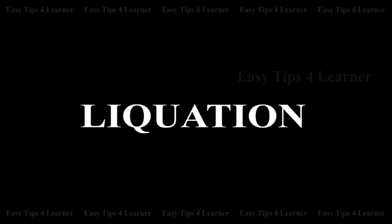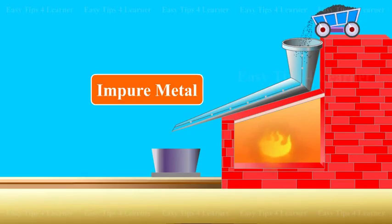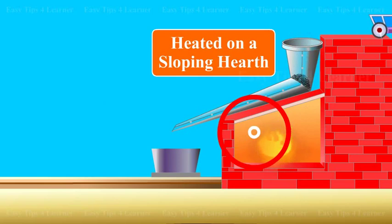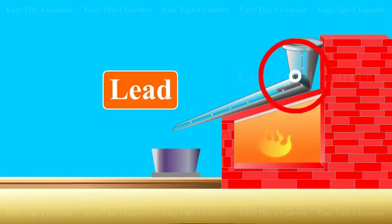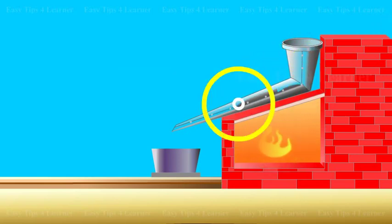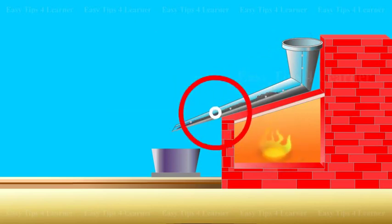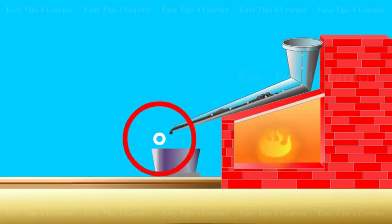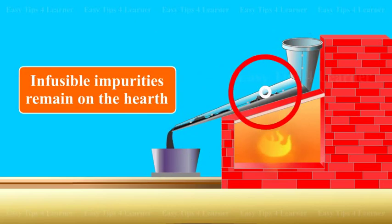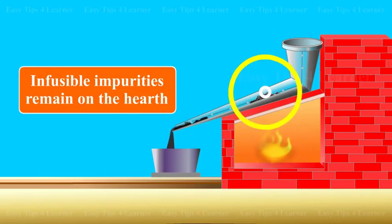Liquation. The impure metal is heated on a sloping hearth. Lead melts and flows down the slope. The infusible impurities remain on the hearth.